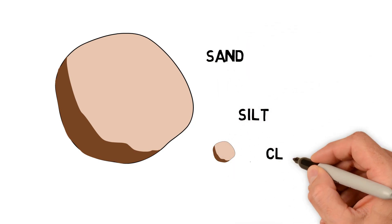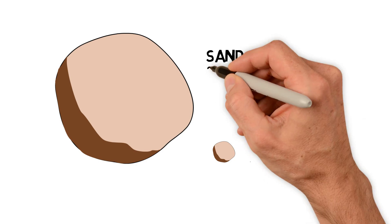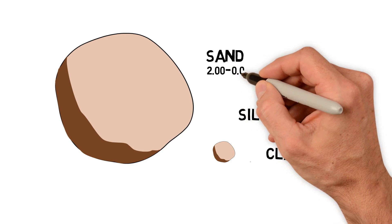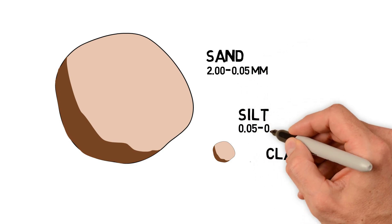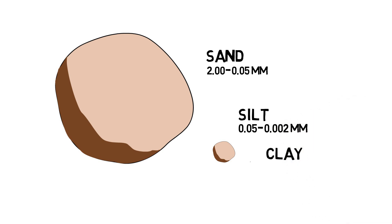There are sand, silt, and clay. These particles are defined by their different sizes. Sand ranges in size from 2 to 0.05 millimeters, silt from 0.05 to 0.002 millimeters, and clay is anything less than 0.002 millimeters.